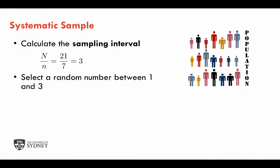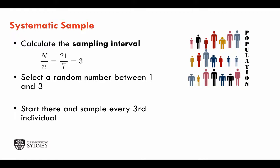The sampling procedure is to select a random number between 1 and 3, and this gives us the first individual to be sampled. In the previous example, this would be individual number 2 as our first random individual between 1 and 3. Then we would sample every third individual, because the sampling interval is 3. If the sampling interval were 4, for example, we would be sampling every fourth individual.